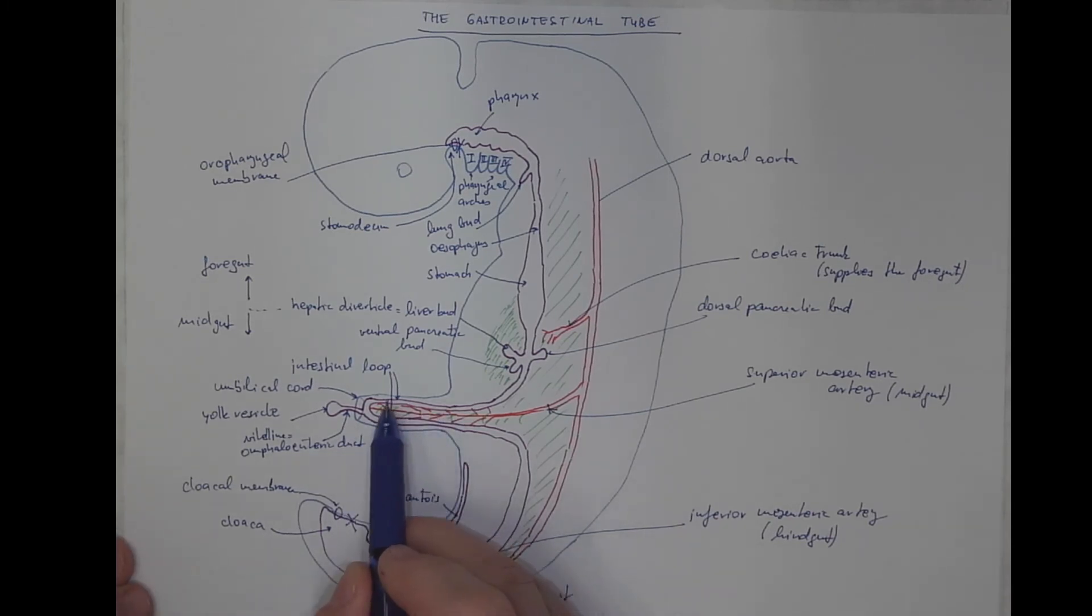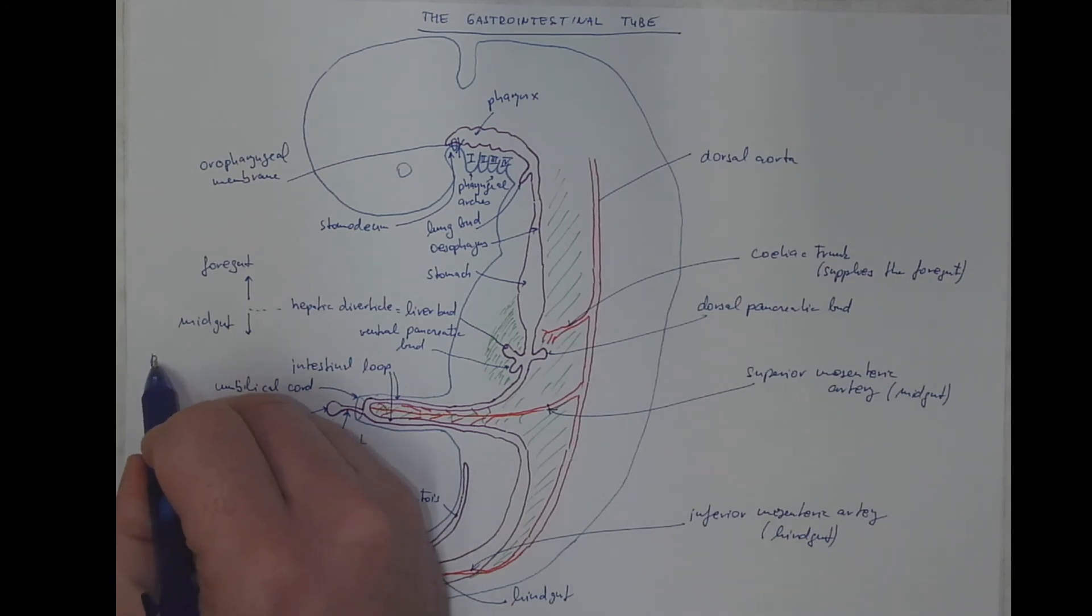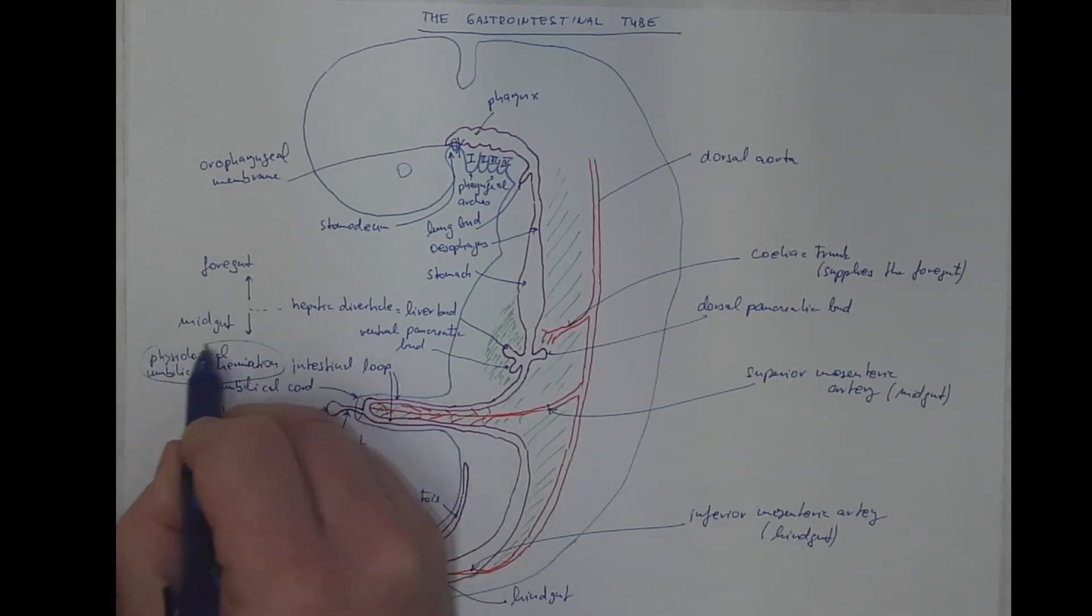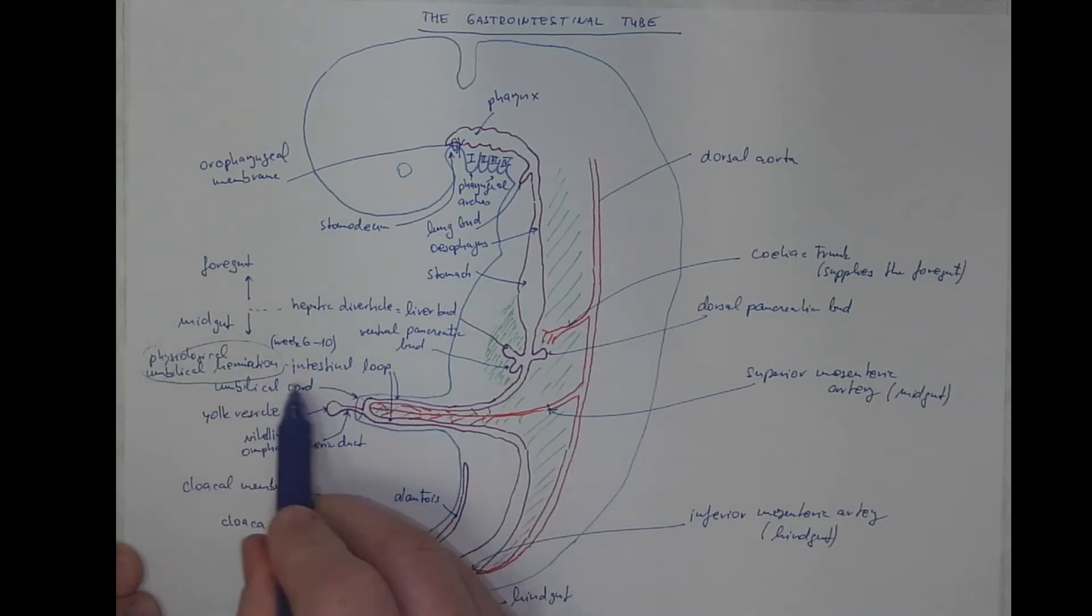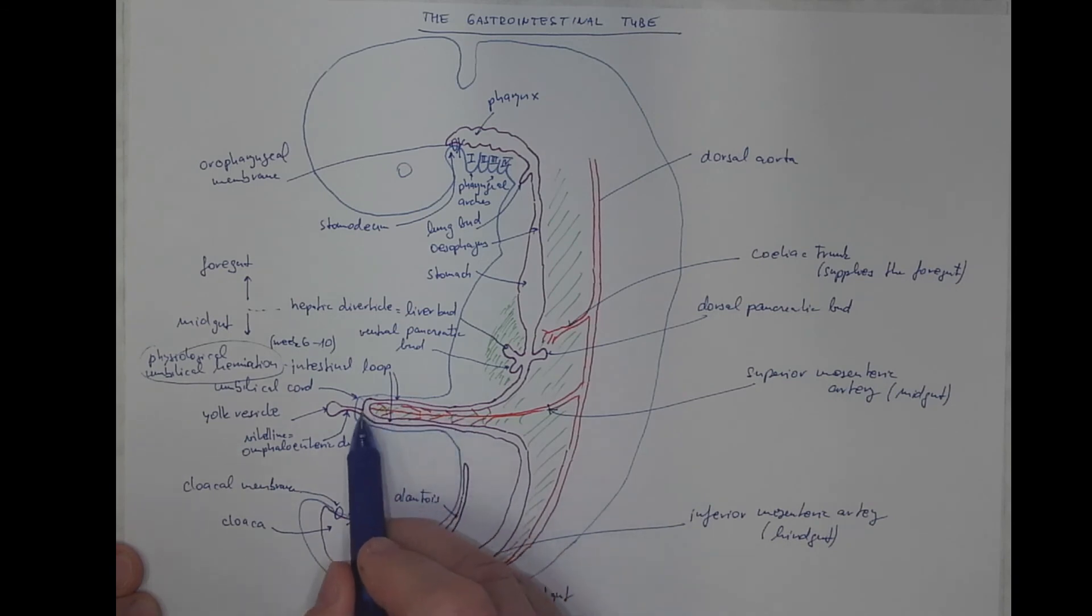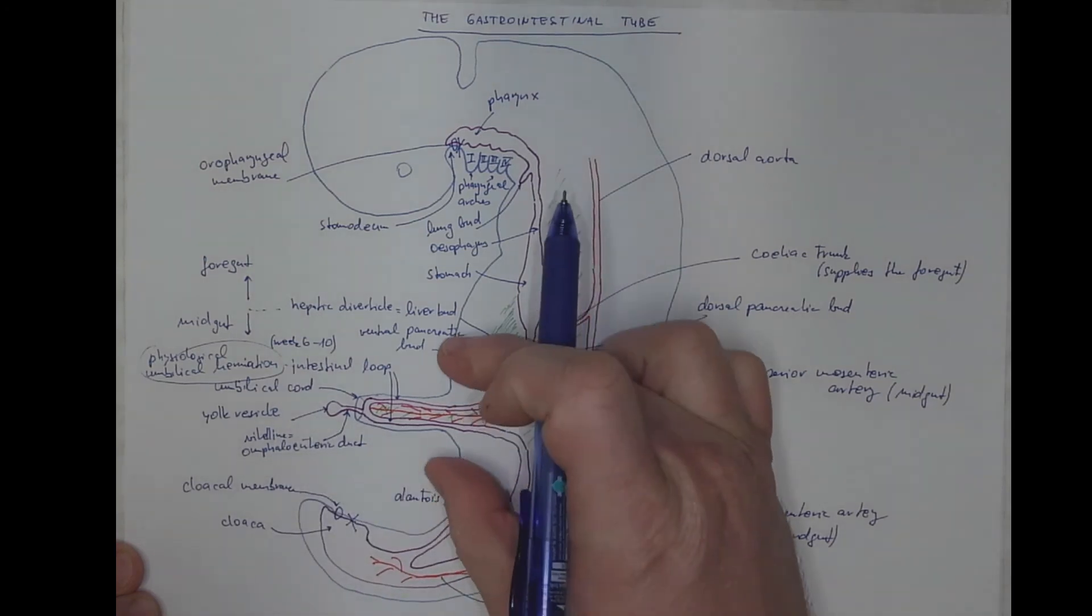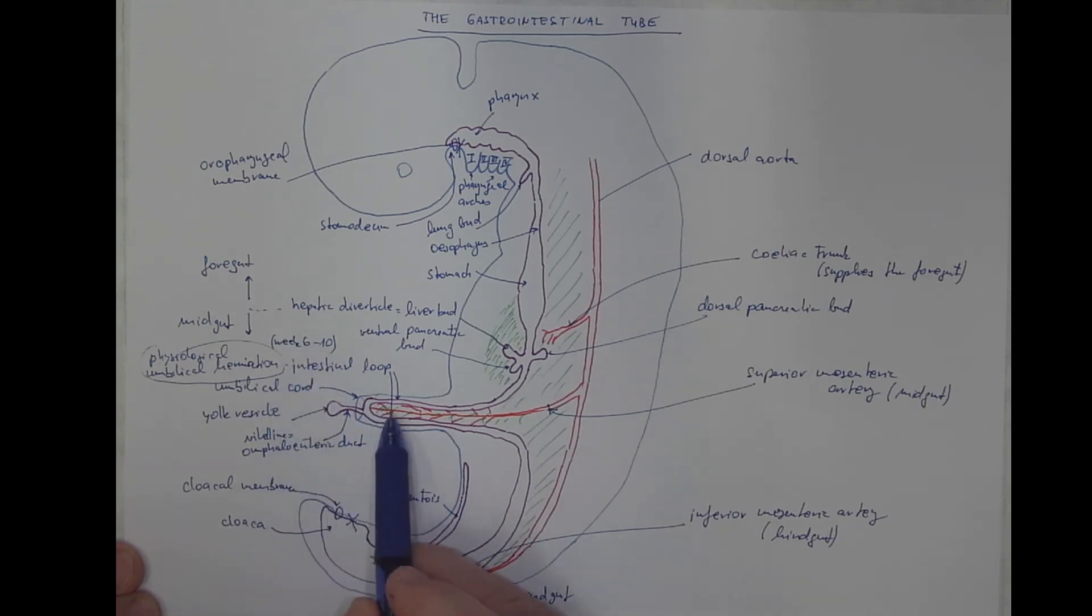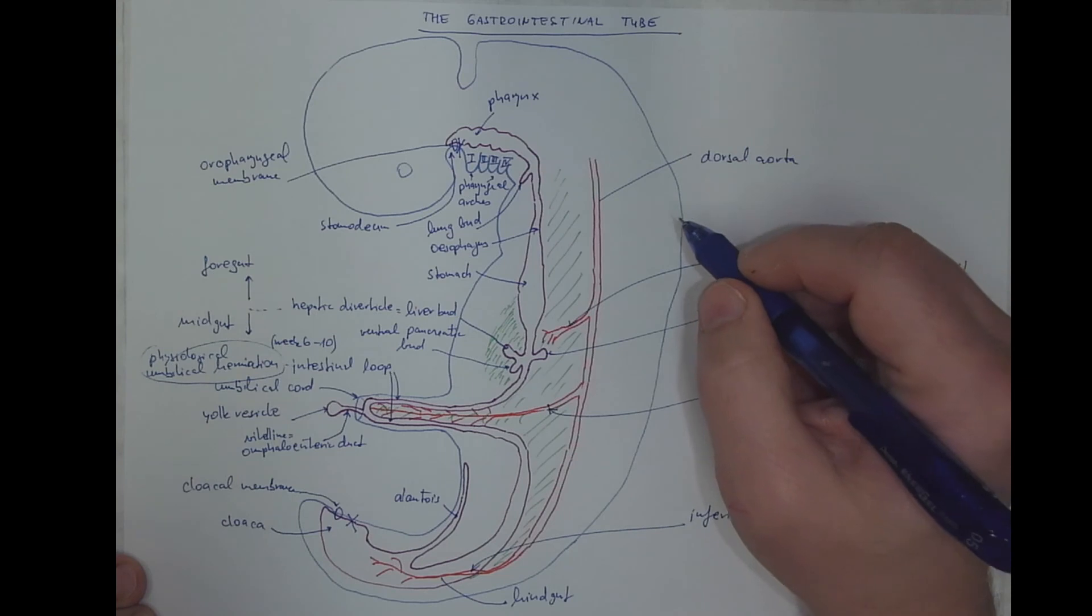The presence of this intestinal loop inside the umbilicus is also called physiological umbilical herniation, which occurs between week six to ten. So, it's perfectly normal in this time, to have part of the intestinal loops outside the body. But they will need to return back, to be pulled back, before the region of the umbilicus really will be closed. Otherwise, they will be trapped outside. So, they need to get back into the body before the week ten.